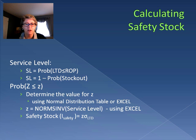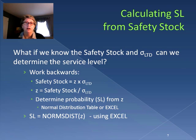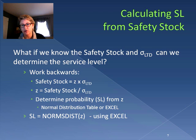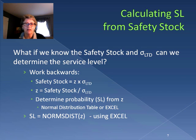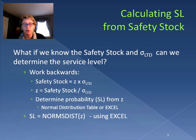Our safety stock equals Z times the standard deviation of the lead time demand. Sometimes we already know the safety stock and the standard deviation of lead time demand and need to work backwards to find the service level. In that case, Z equals safety stock divided by the standard deviation of lead time demand. Once we have Z, we use the NORMSDIST function in Excel — N-O-R-M-S-D-I-S-T — with our Z statistic to calculate the service level.